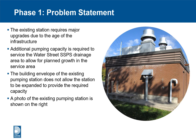The Water Street Sanitary Sewage Pumping Station, as shown in the slide photo, was originally constructed in 1971 and has undergone several upgrades and modifications. As a result, the existing station requires major upgrades due to the age of the infrastructure. Additional pumping capacity is also required to service the drainage area to allow for planned growth, with the population forecasted to grow to a full build-out population of 13,000. However, the building envelope of the existing pumping station does not allow the station to be expanded to provide the required capacity. The purpose of this Class EA is to recommend a preferred solution to provide the required sanitary sewage pumping capacity.